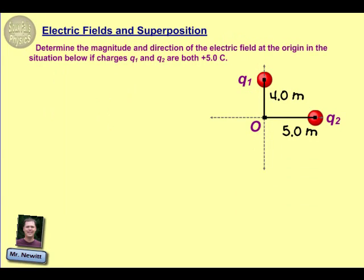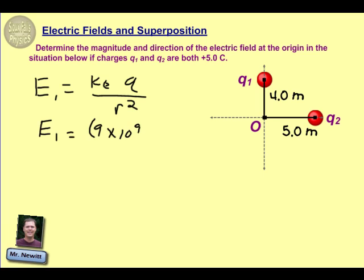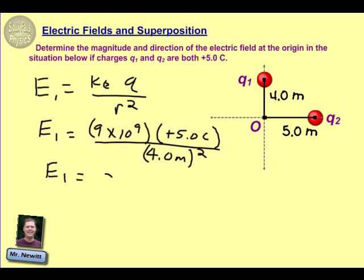Okay, so let's start with Q1. The electric field for Q1 can be figured out by combining our two equations for electric force and electric field, so the electric field is essentially equal to our constant kE times that charge divided by the distance squared. So plugging that in for charge 1, kE is equal to 9 times 10 to the 9th Newtons per Coulomb. The charge given is a positive 5 Coulomb charge, and the distance from the origin is given as 4 meters, which we square. Calculating that out for charge number 1, we get an electric field of 2.8 times 10 to the 9th Newtons per Coulomb.